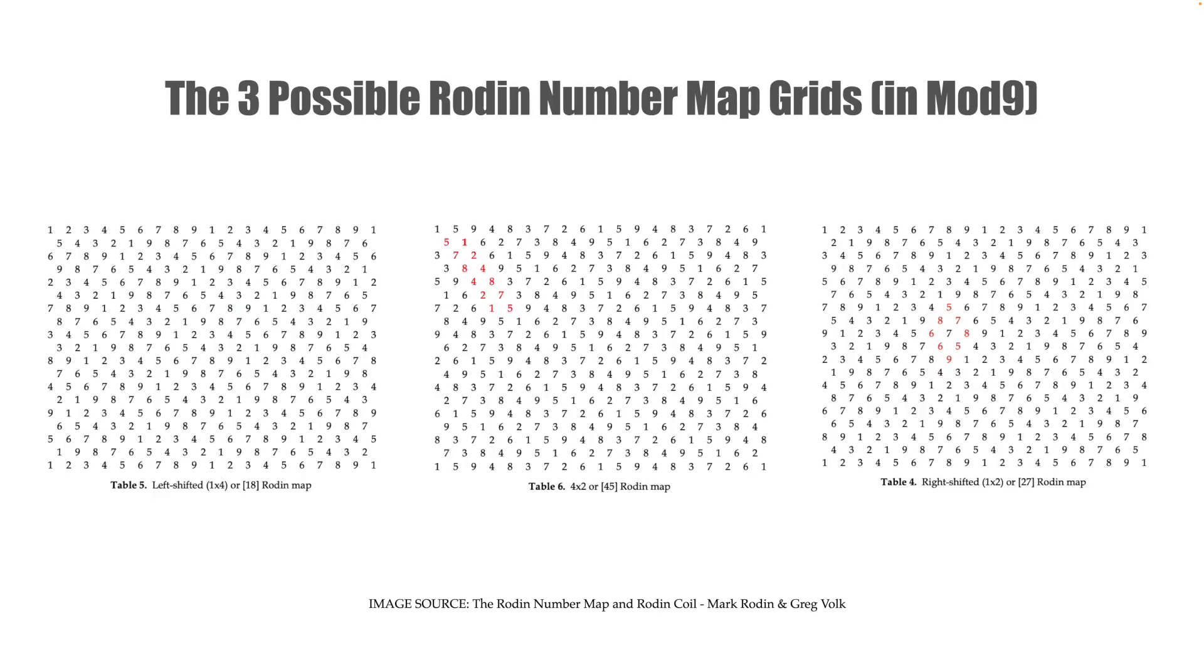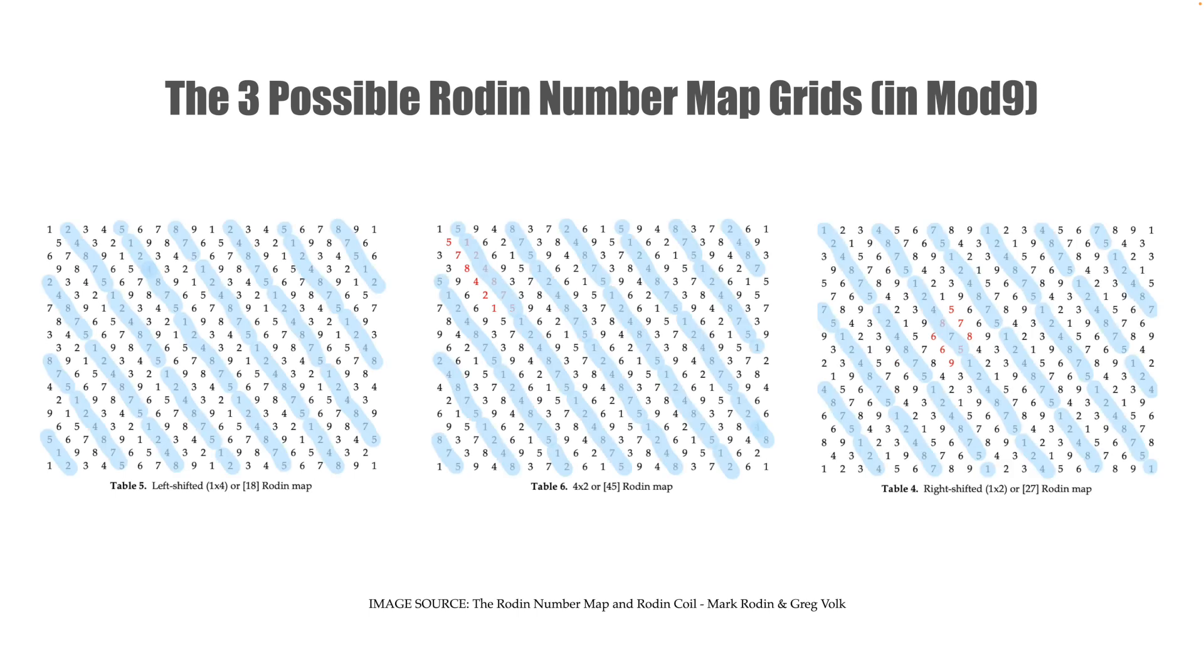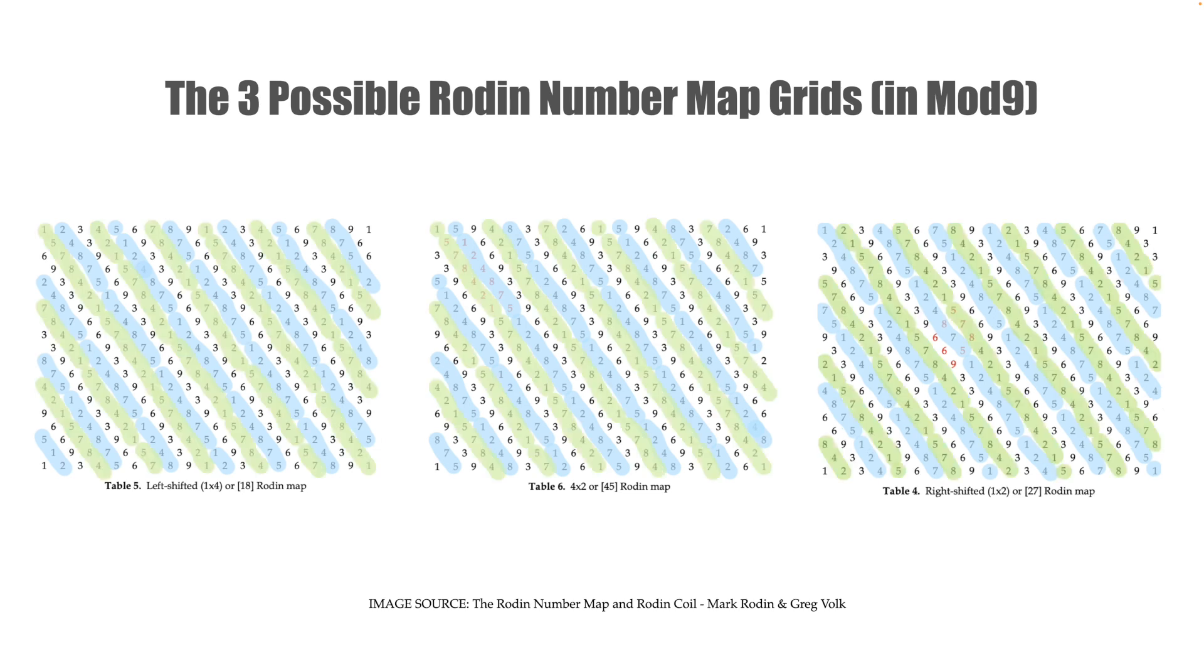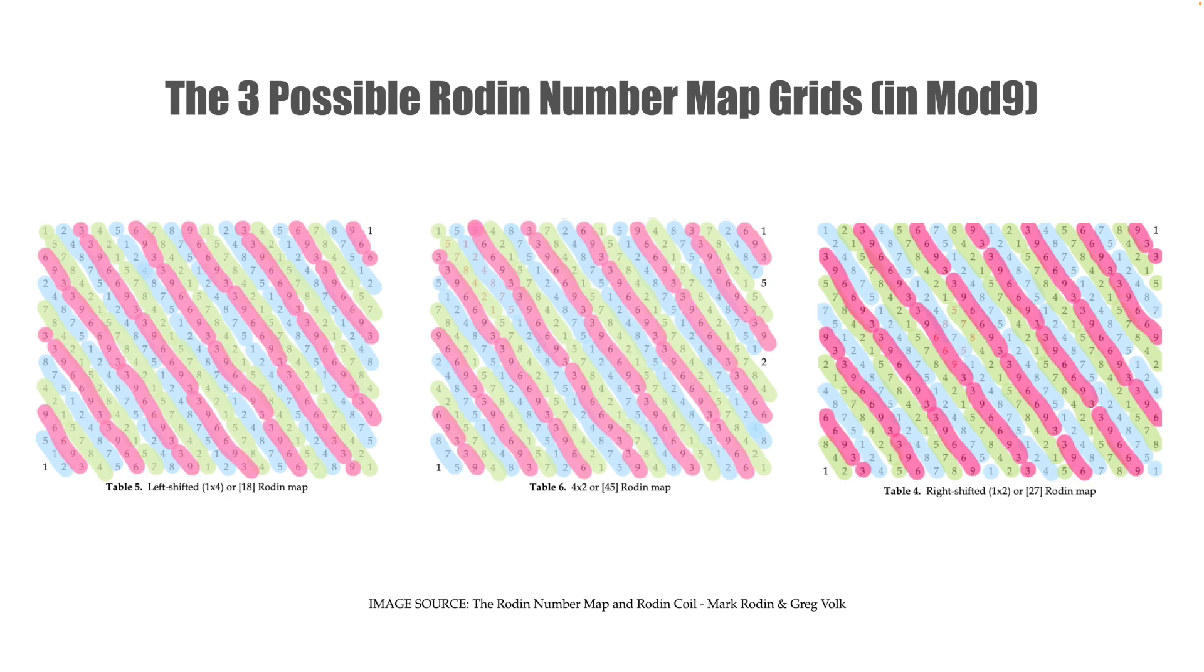In all of our possible Rodin number maps we'll find the same sequences of numbers flowing down on the diagonals. One two four eight seven five and then five seven eight four two one which is just the first sequence in reverse. And then of course the sequence of three nine six, six nine three.